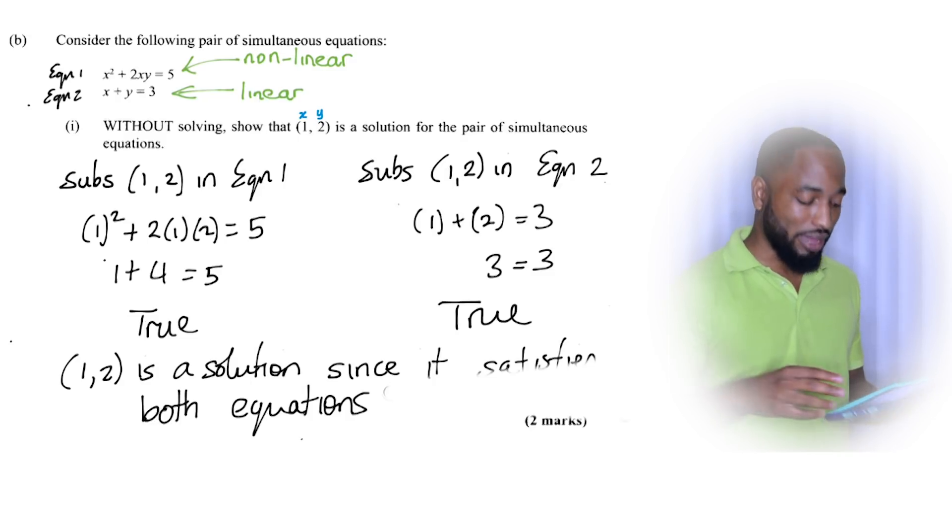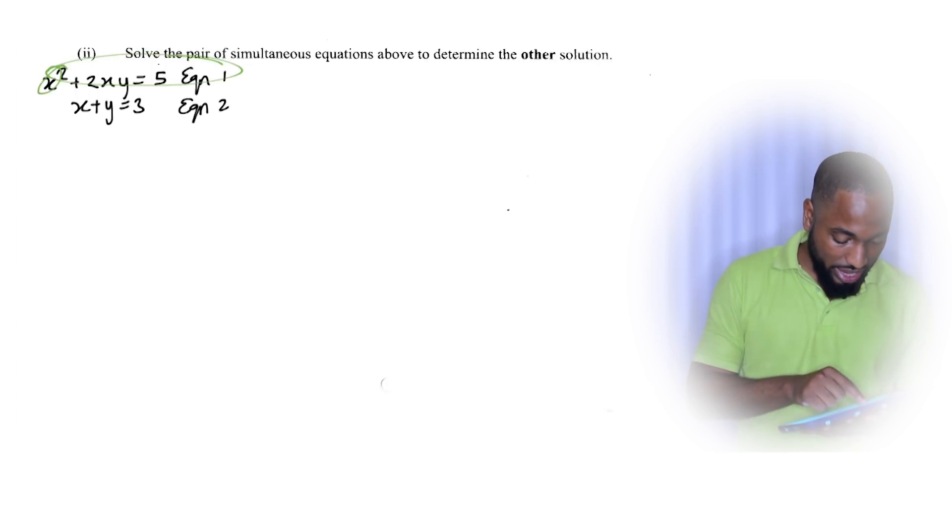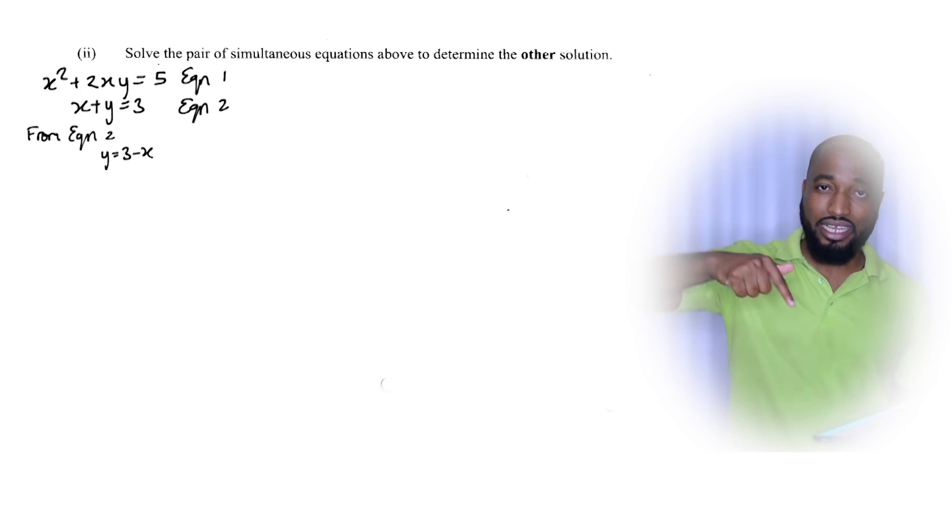Now the next part of the question wants us to solve the equations. This is what we really came here to learn - how to solve simultaneous equations when one of them is non-linear. This is the non-linear one because you're seeing x² and xy - all them fancy things that give a curve. And this is x + y = 3, that's the linear equation. So this is the step you want to do every time: substitute the linear equation into the non-linear equation.